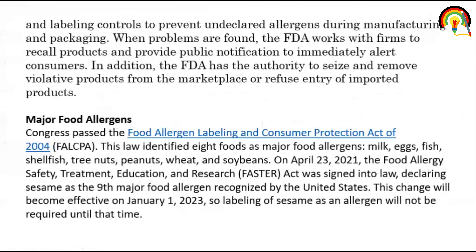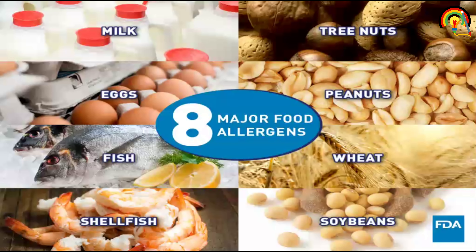Major food allergens: Congress passed the Food Allergen Labeling and Consumer Protection Act (FALCPA), according to which 8 food items act as food allergens — milk, egg, fish, shellfish, tree nuts, peanuts, wheat, and soya bean. On 23rd April 2021, the Food Allergy Safety Treatment Education Research Act was signed, according to which sesame is also added as a major food allergen.